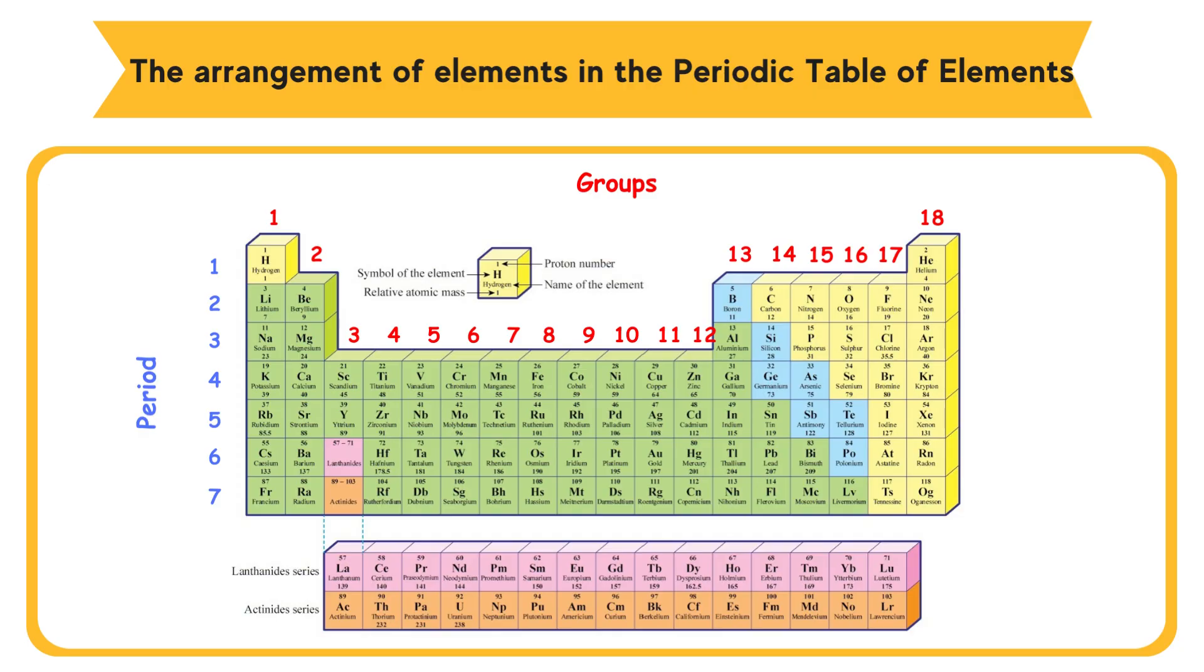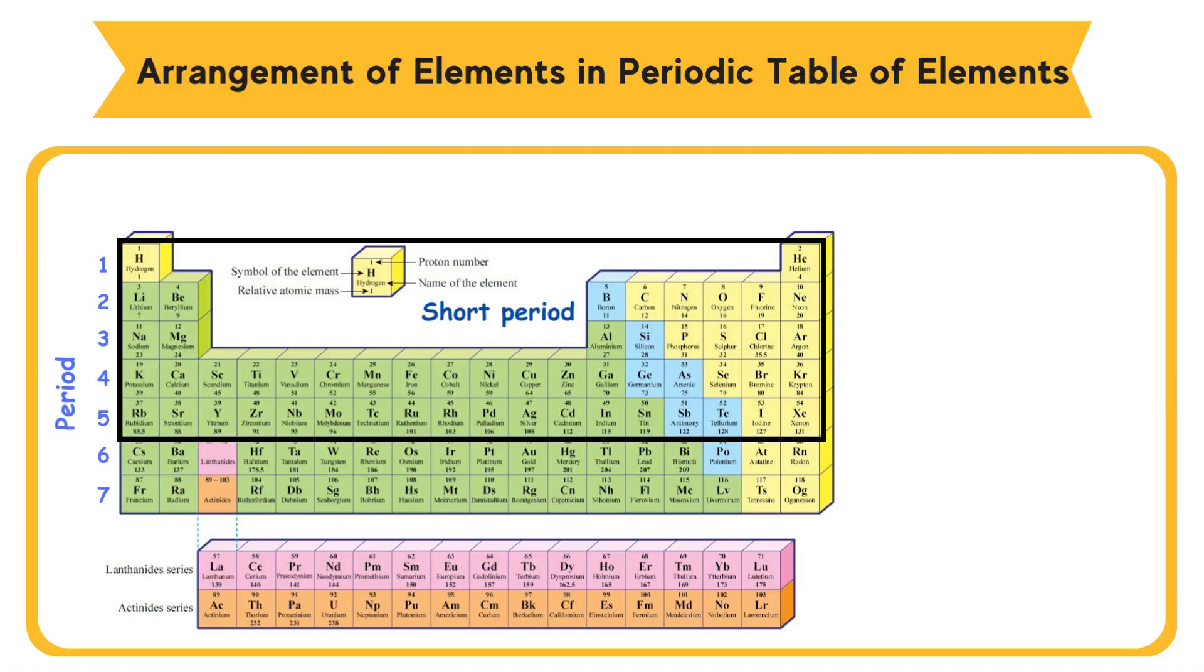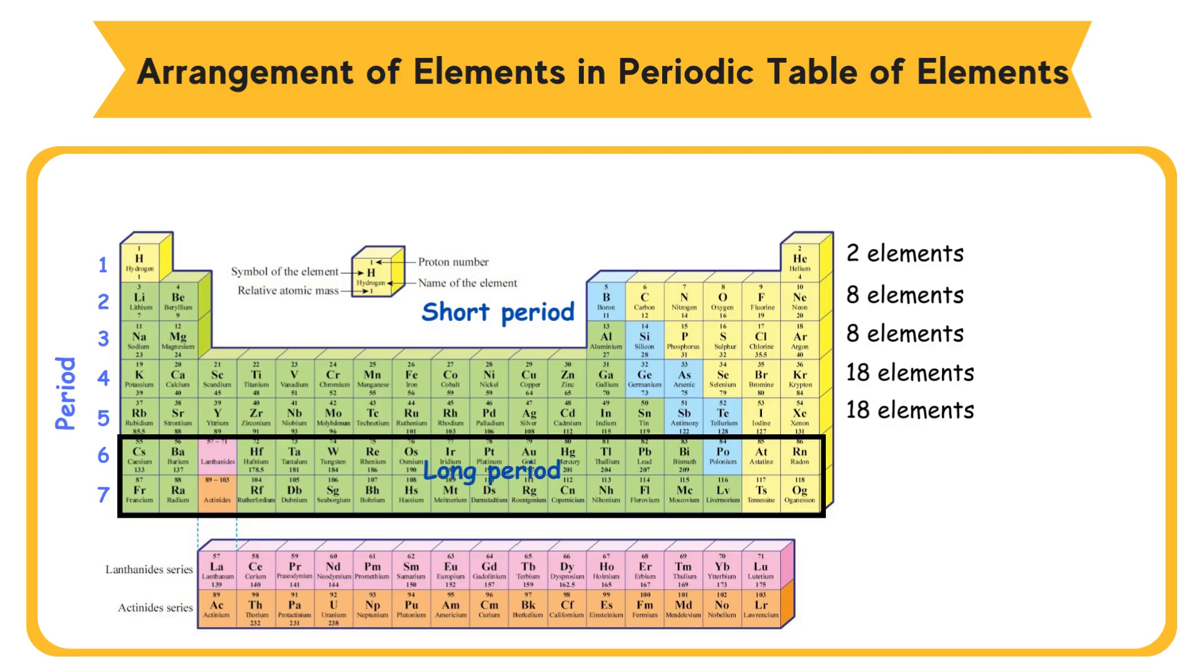There are 7 periods in the periodic table of elements. Short period: period 1 consists of 2 elements. Period 2 and 3 consist of 8 elements. Period 4 and 5 consist of 18 elements. Long period: period 6 consists of 32 elements and it is called lanthanide series. Period 7 consists of 32 elements and it is called actinide series.